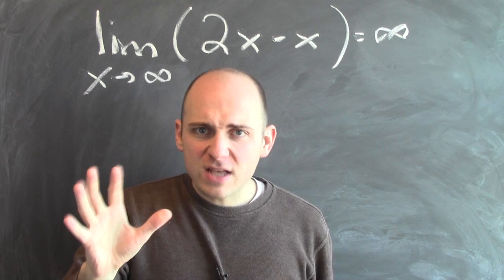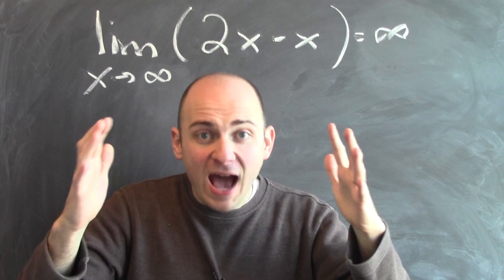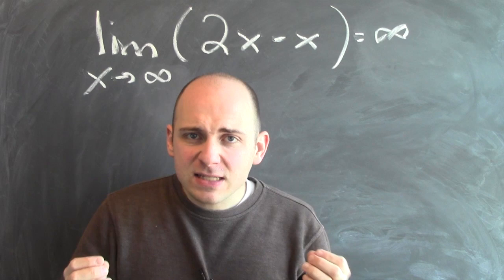Contrast that with actual infinity. To have an actually infinite pile of fish would be to have, right now, a pile of fish that contains infinitely many fish at this very moment. Now, is it possible to combine that way of thinking with infinity with these kind of limit statements?